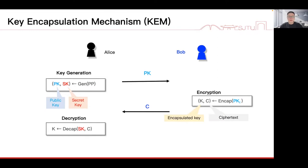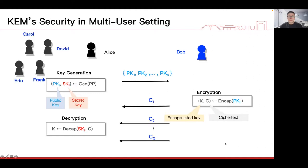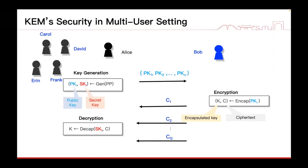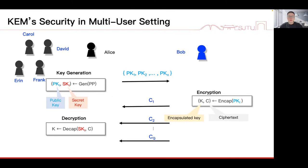KEM has many applications, such as in constructing public key encryption, authenticated key exchange protocols, etc. In real-world scenarios, there might be many users, each of them generates their own keys, and each two of them might communicate and send many ciphertexts to each other. This is called the multi-user setting.